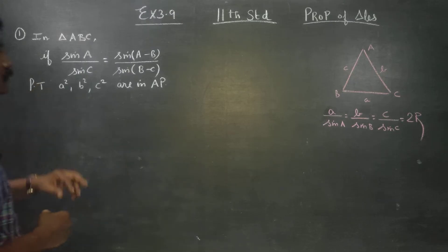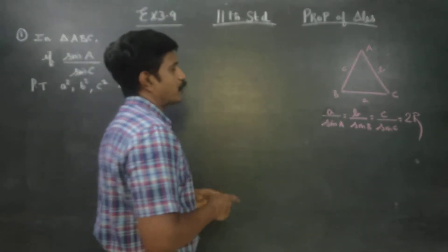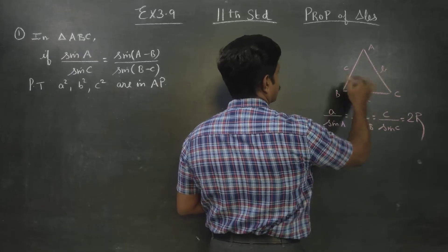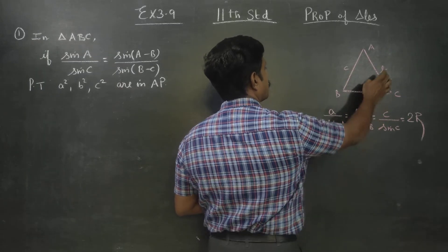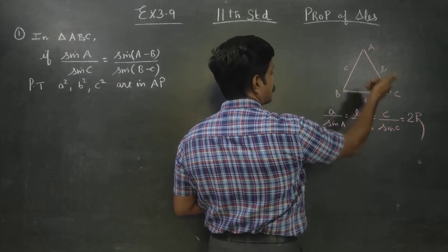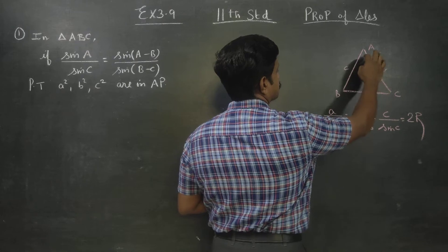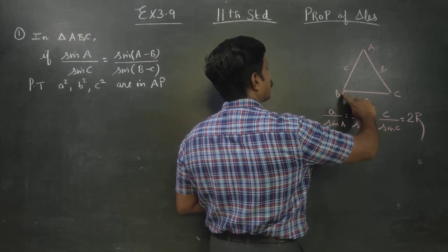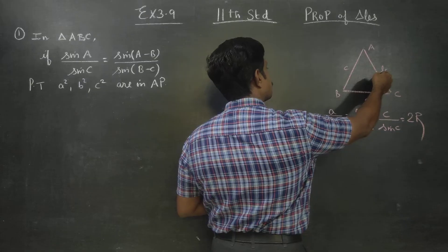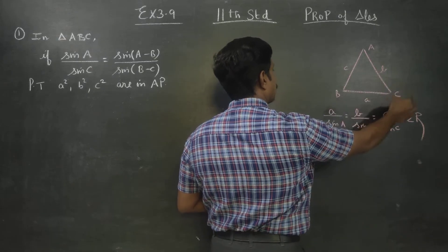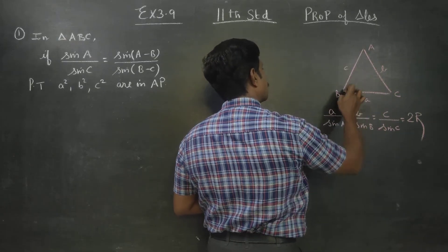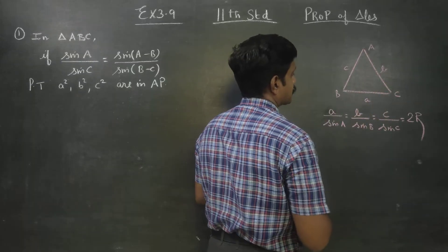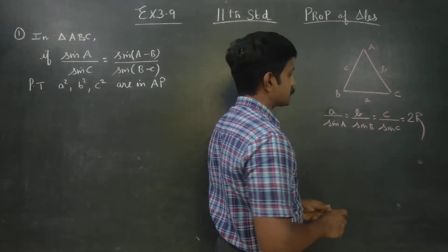Before entering into this sum, in properties of triangles, capital A, B, C are the angles of the triangle and small letters a, b, c are the opposite sides. Capital A's opposite side is small a, angle B's opposite side is small b, and small c is the side length. Small a, b, c are lengths of the sides; capital A, B, C are the angles.